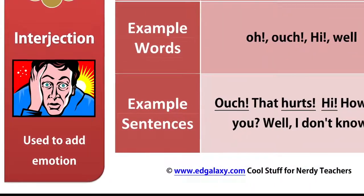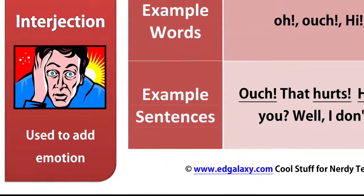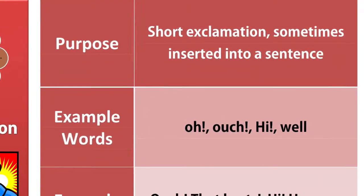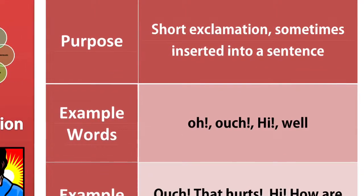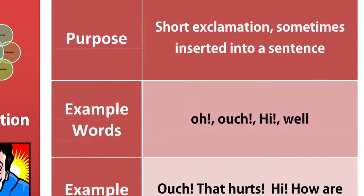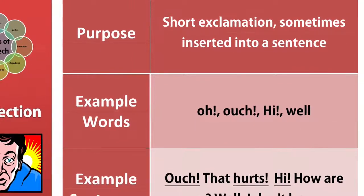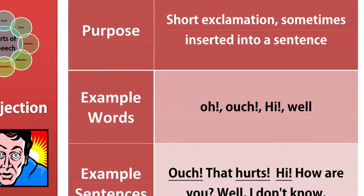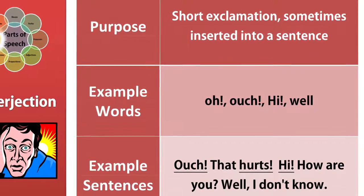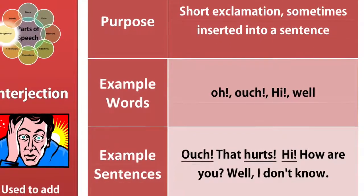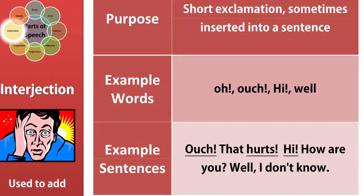Interjection. An interjection is used to add emotion. Its purpose: it is a short exclamation sometimes inserted into a sentence. Example words: oh, ouch, hi, well. Example sentences: Ouch, that hurts. Hi, how are you? Well, I don't know.